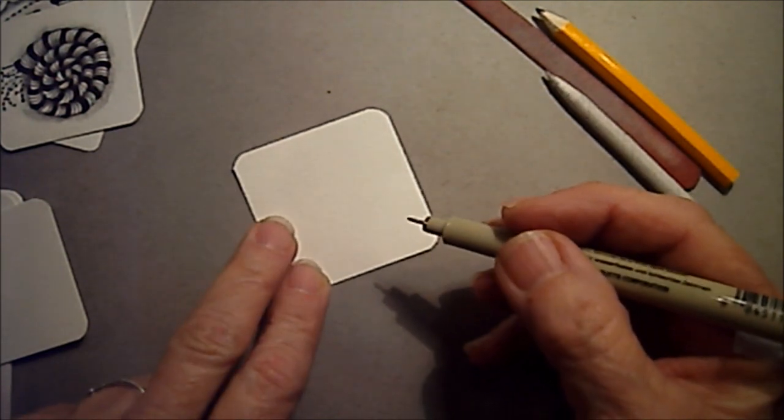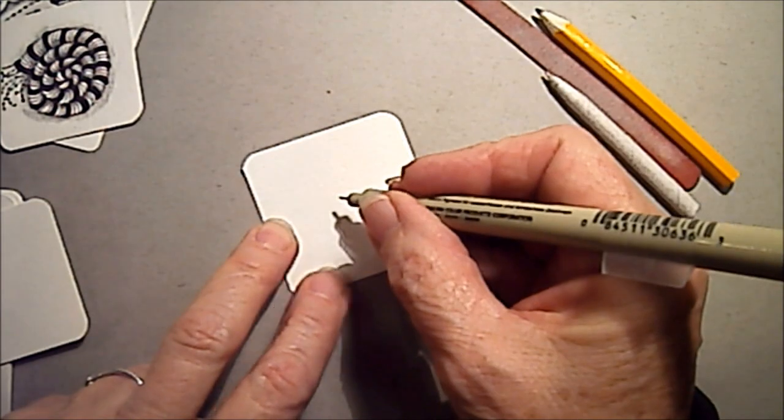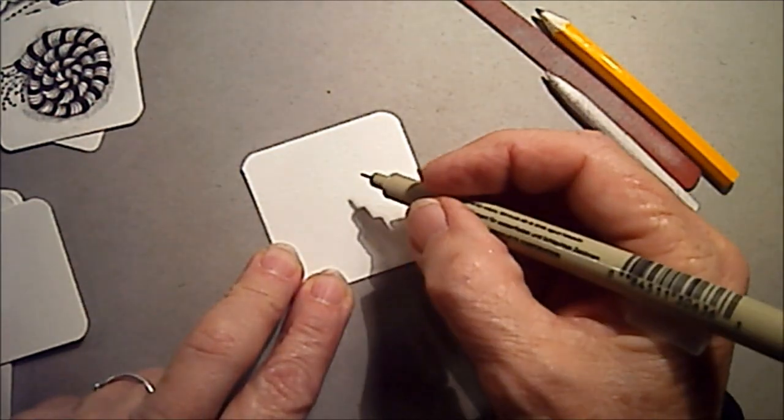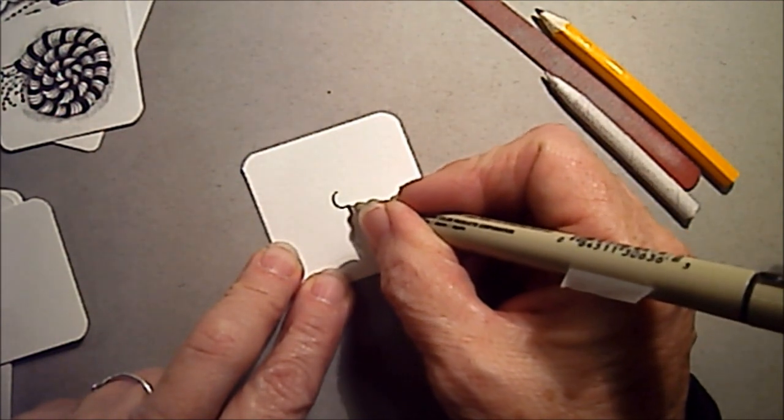These are two by two, and they're just lots of fun, tiny little tiles, quick and easy to do. We're going to start with our pen and just draw a spiral.